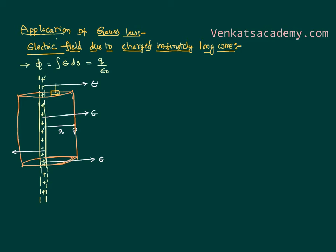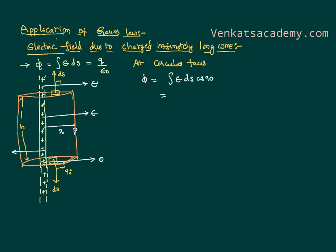The surface area is a vector whose direction is radially outward. So you can notice that on the circular faces of the cylinder — which has a height h — E and dS are perpendicular to each other. Similarly for the lower circular surface, the surface area direction is radially outward and those two are also perpendicular. So at the circular faces of the cylinder, flux equals E·dS·cos 90°, which is 0. There is nothing to apply from Gauss law at the circular faces.